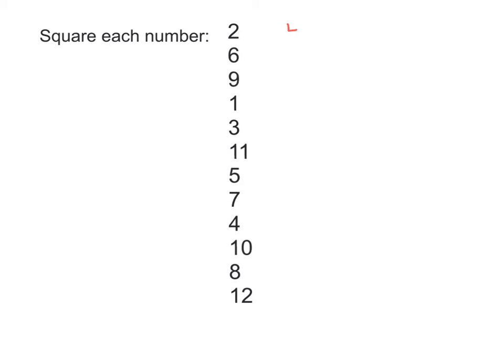Okay? So, 2 squared, you should have got 4. 6 squared is 36. 9 squared is 81. 1 squared is 1. 3 squared is 9. 11 squared, do you know that one? It's 121. 5 squared is 25, 5 times 5. 7 squared is 49. 4 squared is 16. 10 squared is 100. 8 squared is 64. And 12 squared, 144. It's important for us to know all of these squares as we go along.